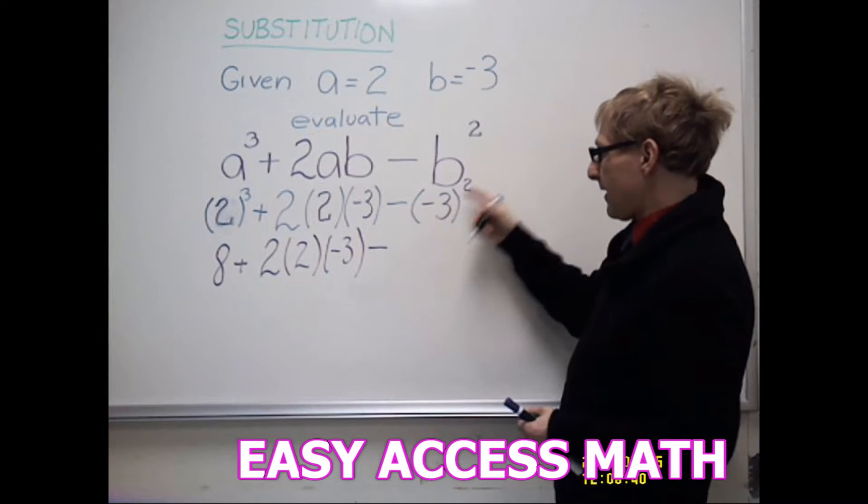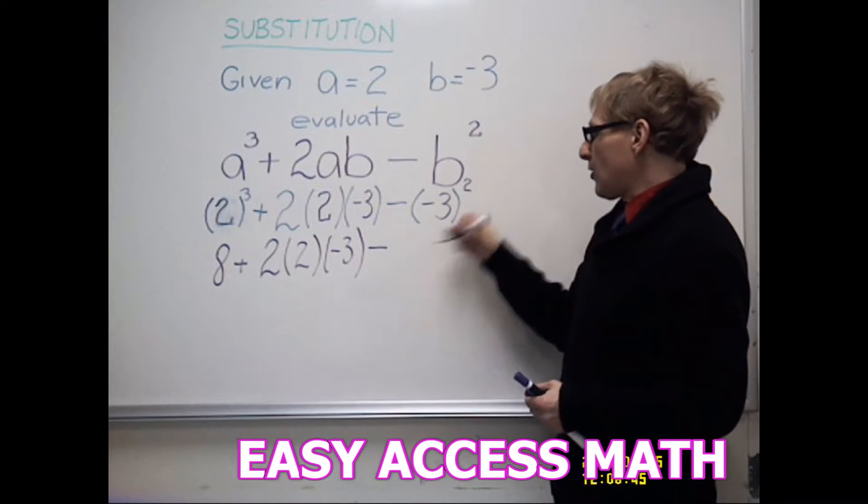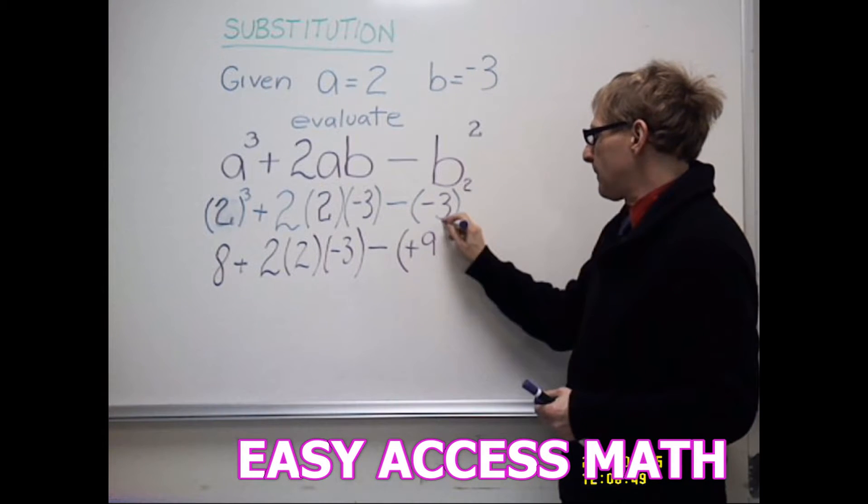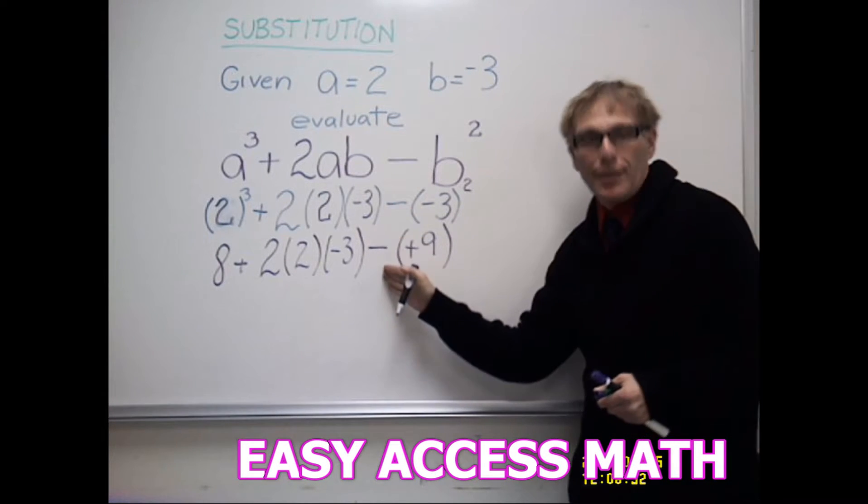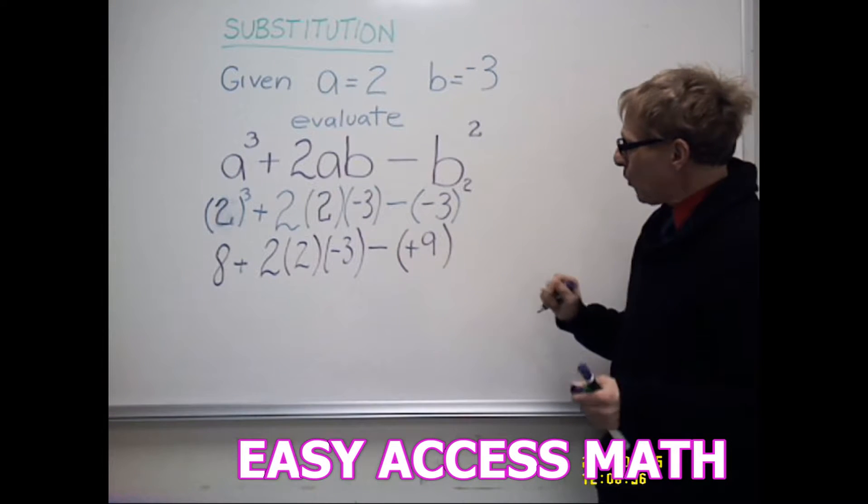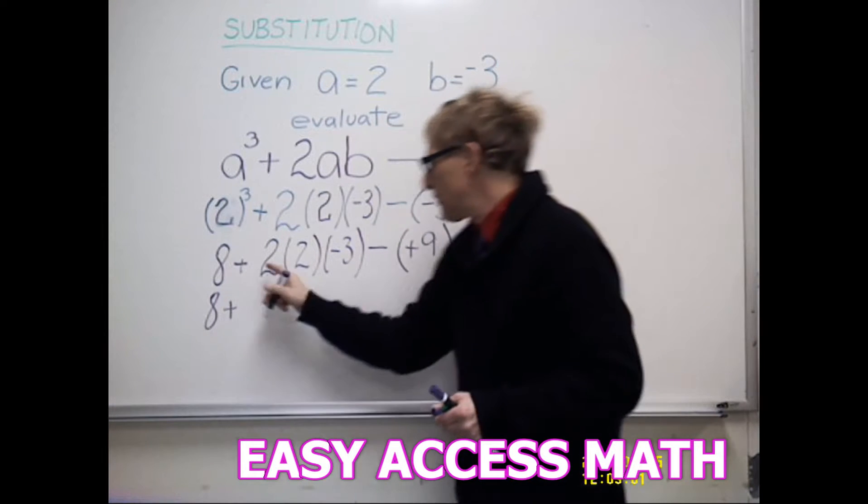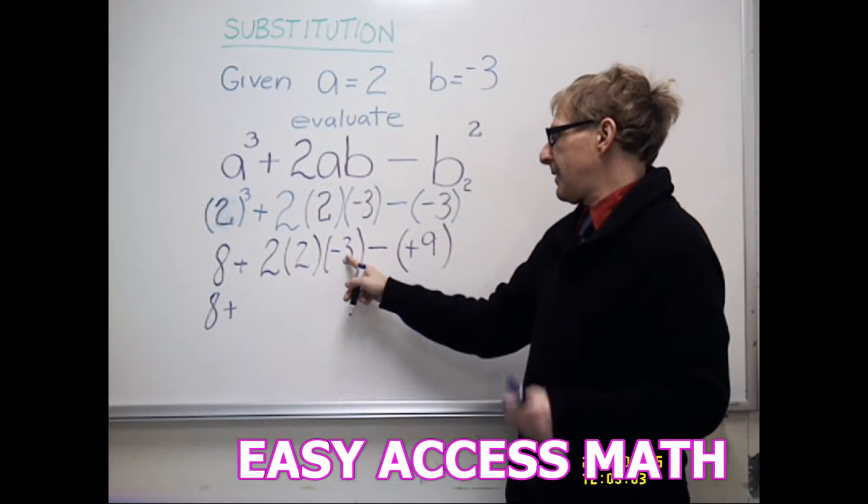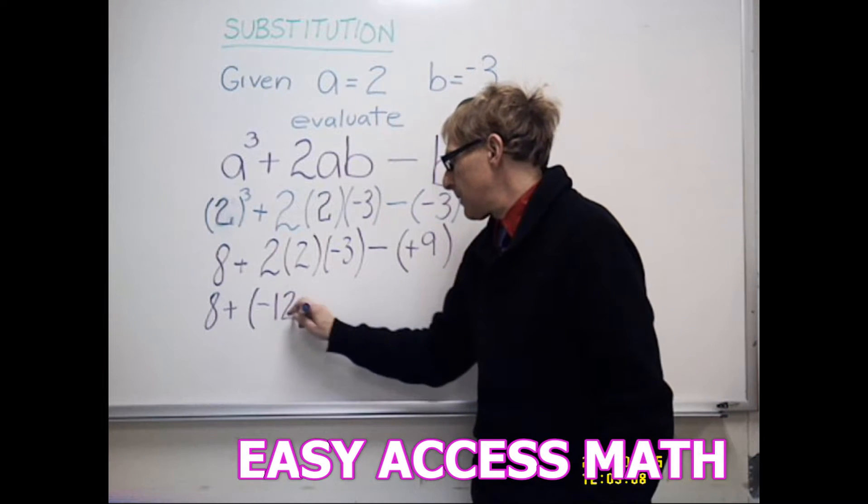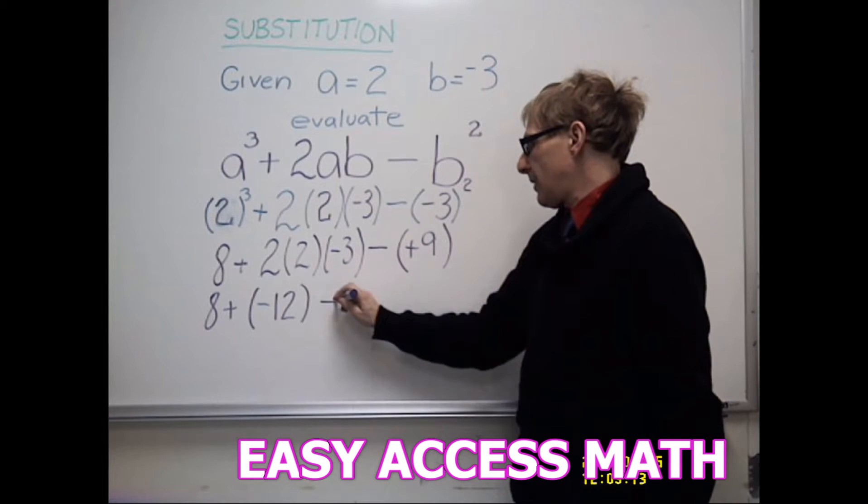Minus negative 3 to the second power. We're looking at this, just the exponent. Negative 3 times negative 3 becomes positive 9. But notice there's still a negative that came down on the outside. That stays. Now I'll do all my multiplication. Bring down that 8. Plus 2 times 2 is 4 times negative 3 is negative 12. Minus a positive 9 by itself.